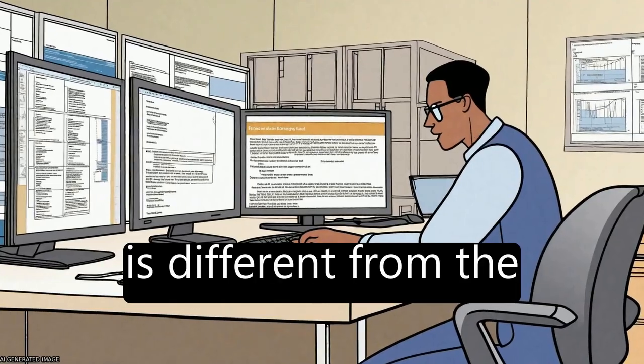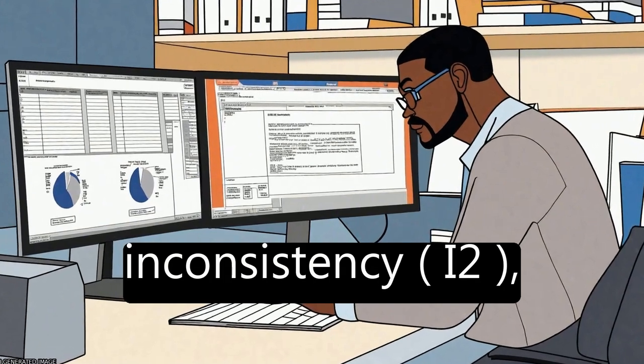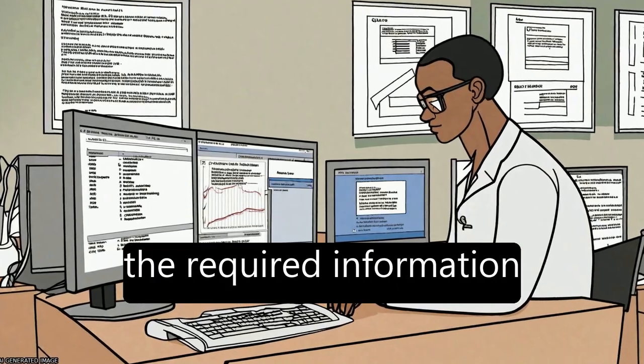The authors show that D2 is different from the commonly used measure of heterogeneity inconsistency, I2, which may underestimate the required information size.